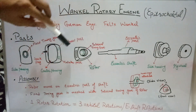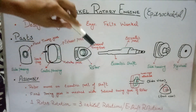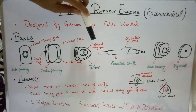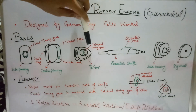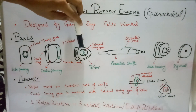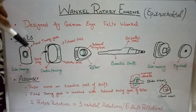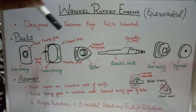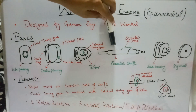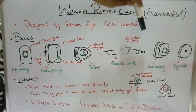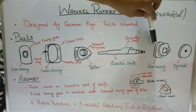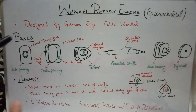There is a triangular-shaped rotor, equivalent to the piston in a reciprocating engine. It has an internal timing gear which has greater teeth than the fixed timing gear on the left side housing. Then there is an eccentric shaft with its eccentric part, and a right side housing.